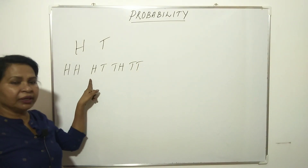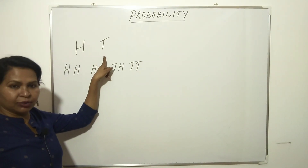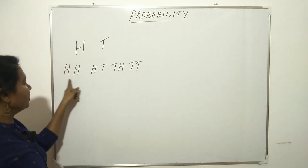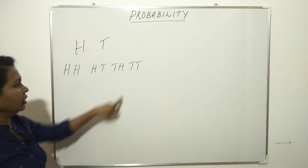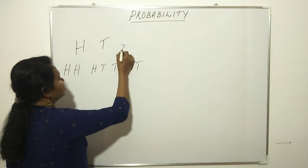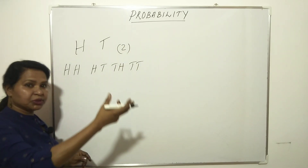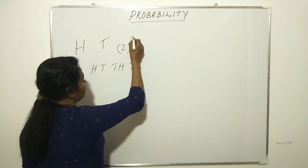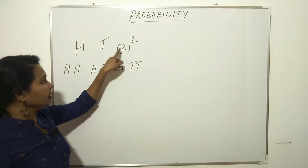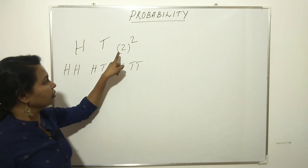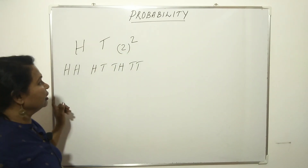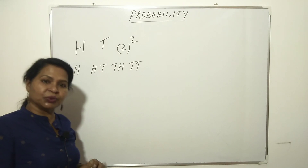So here we learn two outcomes for one coin toss. The sample space for two coin tosses has four outcomes. The number of outcomes for one coin toss is 2. The number of tosses is the power. So 2 raised to 2 means 4. If you toss 3 times, the outcomes are 2 raised to 3. If 4 times, 2 raised to 4.